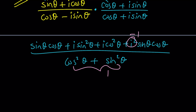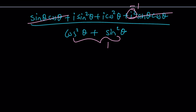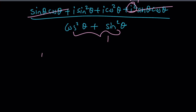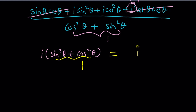Those two terms cancel out, leaving us with something super nice: i times sine squared theta plus cosine squared theta. But sine squared plus cosine squared is one, and from here we get i. Was that a surprise? Let's see the other methods — just stick around.